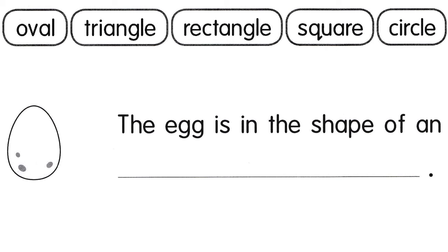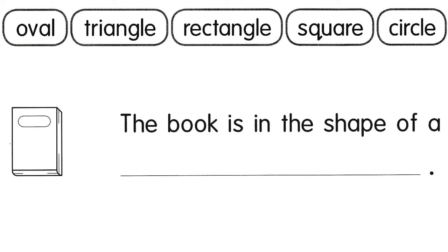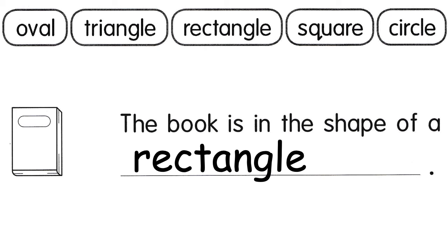The flag is in the shape of a triangle. The egg is in the shape of an oval. The book is in the shape of a rectangle.